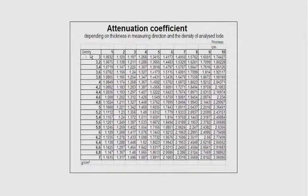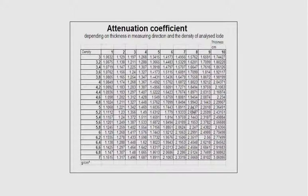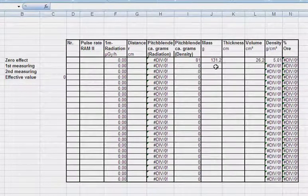The attenuation coefficient lambda_d depends on the density with a simple relation. Those who don't like integration can use the pre-calculated table in front of you. For example, if the density of the load is 5 grams per milliliter and the thickness in measurement direction is 8 centimeters, you would multiply the dose rate by a factor of about 2 to get the correct value for the uranium mass inside the load.